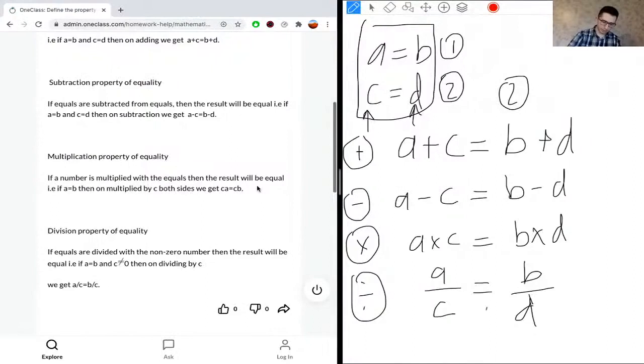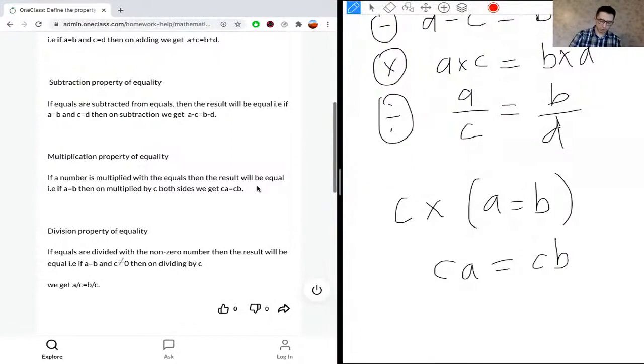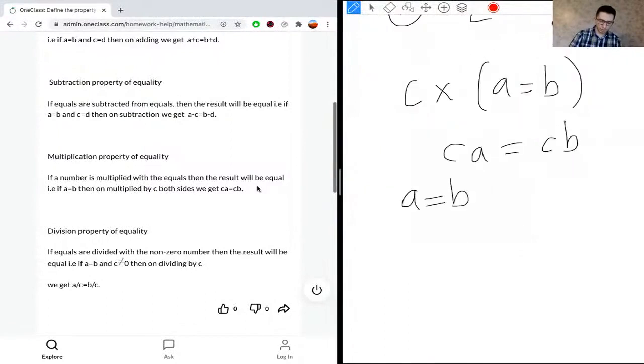So we'll make some space down here. So if we were to multiply c times a equals b, we would get ca equals cb. And then similarly, if you were to have a equals b divided by a constant c, we would get a over c equals b over c. So it applies to both sides of the equation in this scenario. And then here c cannot equal to 0.